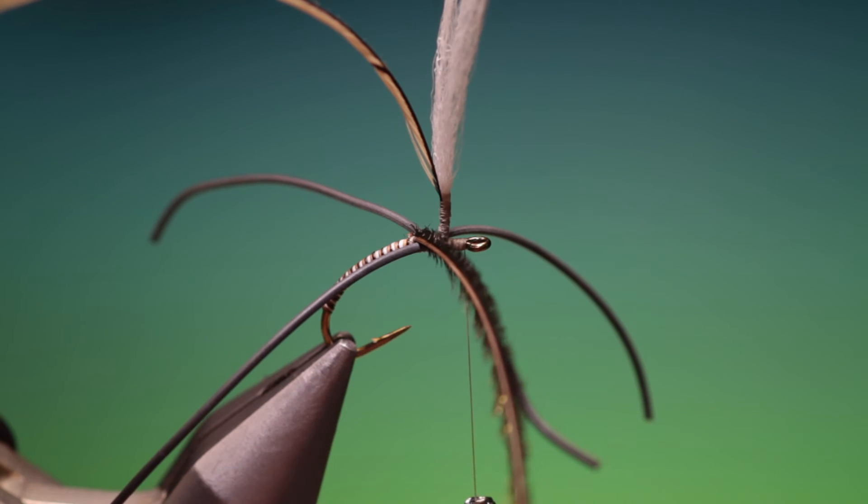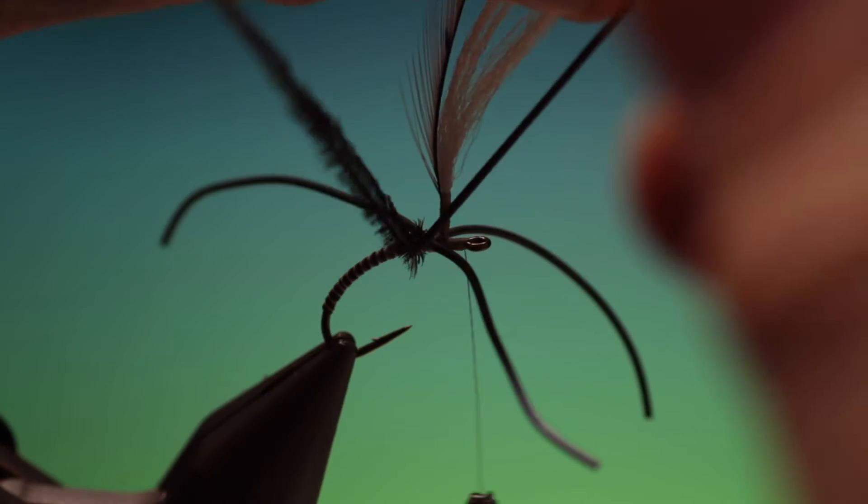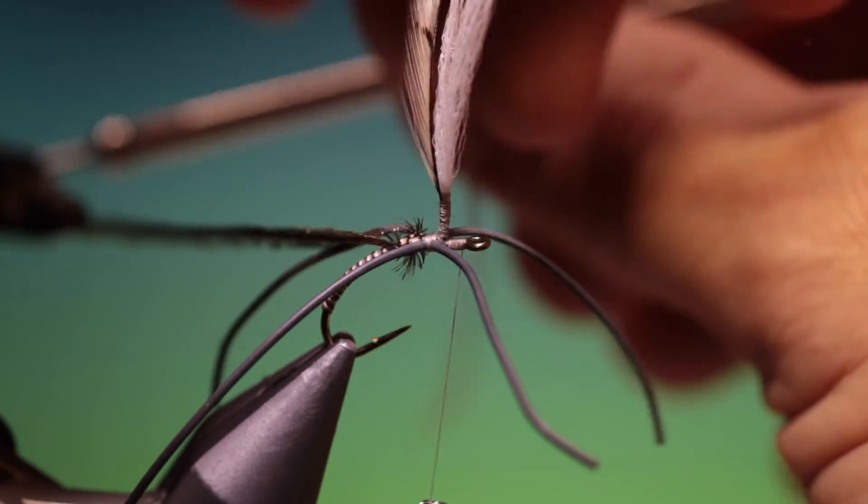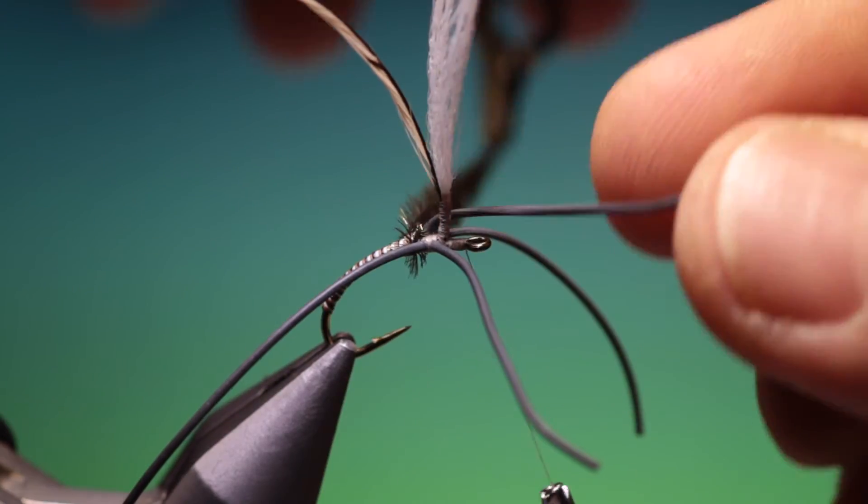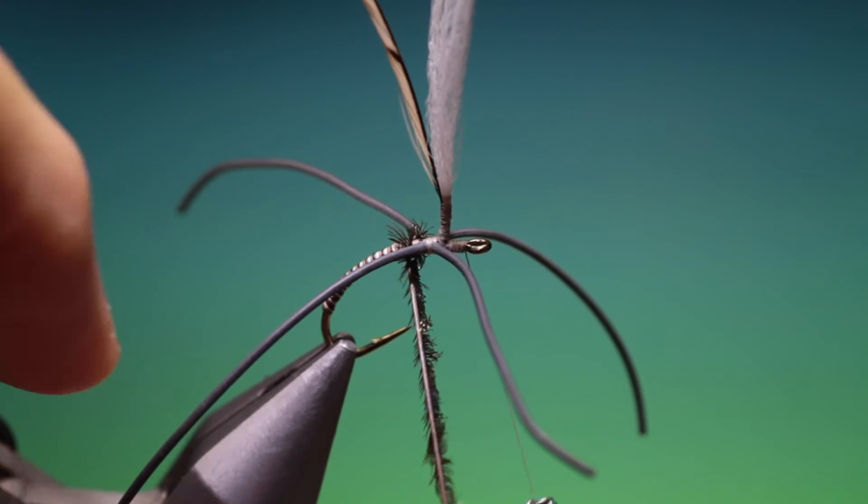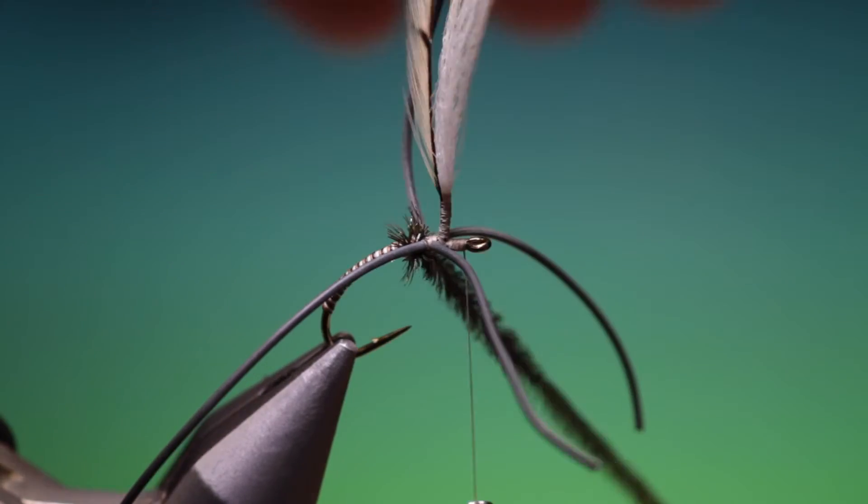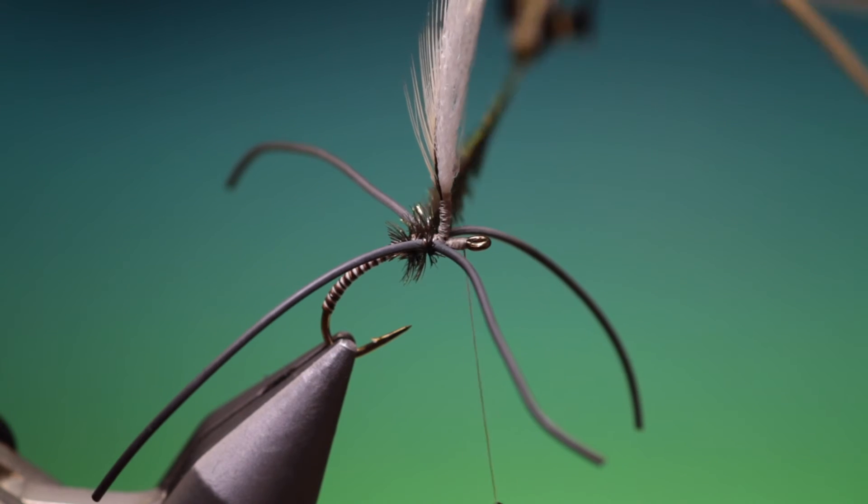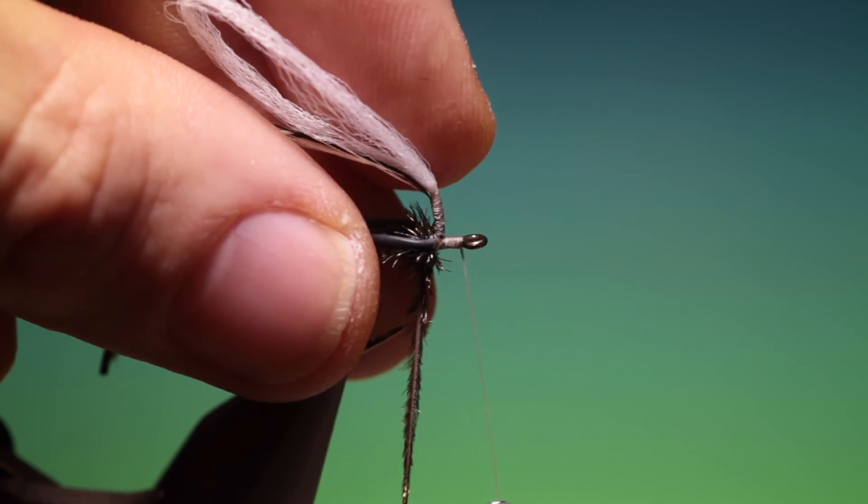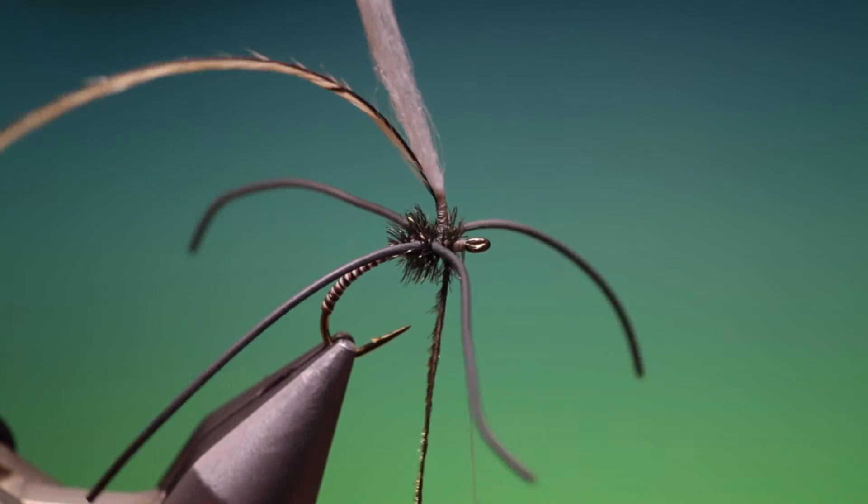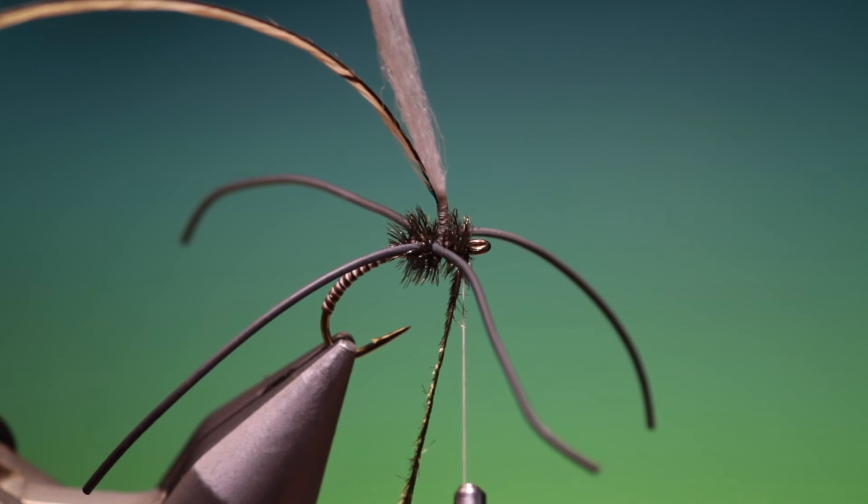Hackle plier. I find it easier with that. More control. So what we want to do is just make a couple of turns at the rear behind the legs. One more. There we are. And then a couple of turns in between the legs. And we'll pull them all back. Go forward. Two or three turns just to finish the thorax.